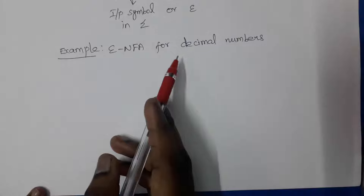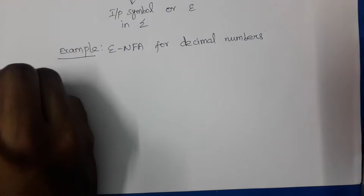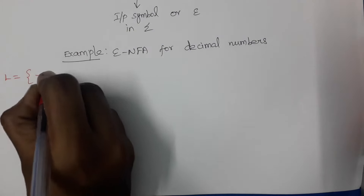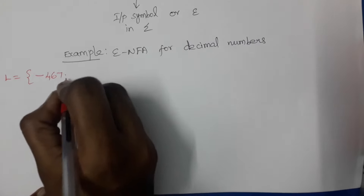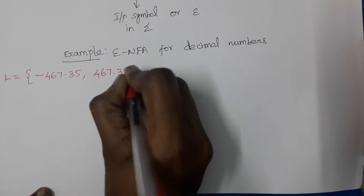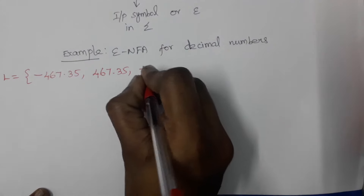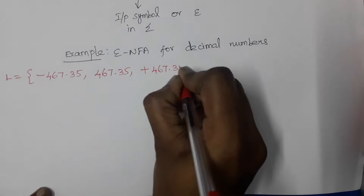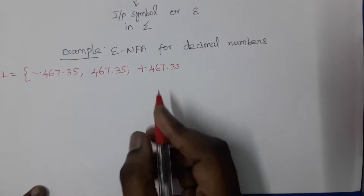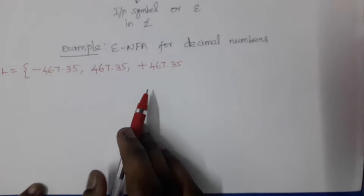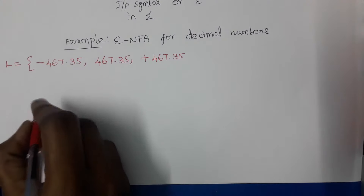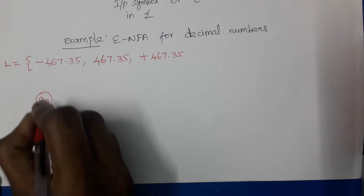Now we will see one example: construction of Epsilon NFA for decimal numbers. The set of strings may include decimal numbers such as minus 467, 467.35, positive 467.35, or plus 467.35. So positive numbers can be given like 467, 467.35, or plus 467.35. These are all decimal numbers that must be accepted by our Epsilon NFA.